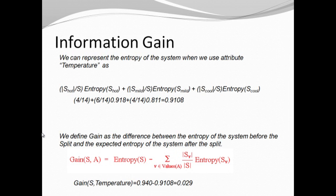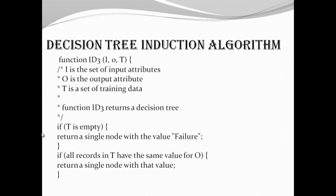Information gain. We can represent the entropy of our system when we use the attribute temperature. We define gain as the difference between the entropy of the system before the split and the expected entropy of the system. Both information gain and entropy are used for calculating the decision tree output.